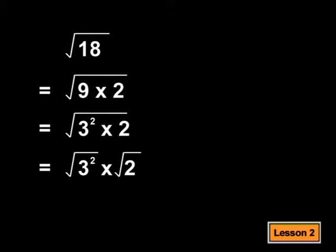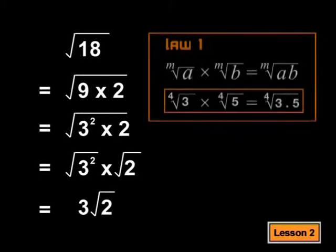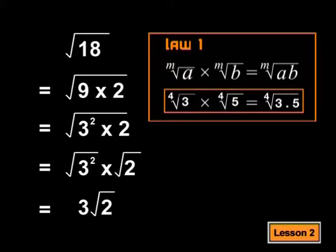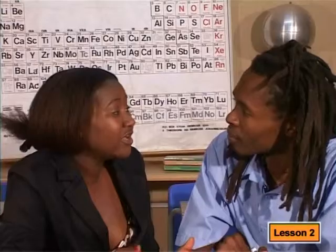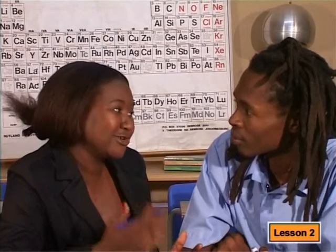And what is the square root of 3 squared? It's 3. Ah, I see. If I apply the law, I get 3 root 2. And you'd have written root 18 in its simplest surd form.